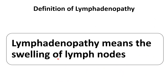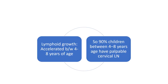Whenever there is a swelling or enlargement of lymph nodes, we label it as lymphadenopathy. We should remember that between 4 to 8 years of age, lymphoid growth occurs. During this duration, in 90% of children, cervical lymph nodes will be palpable but non-significant — not having any significant lymphadenopathy. We label this as physiological lymphoid growth.